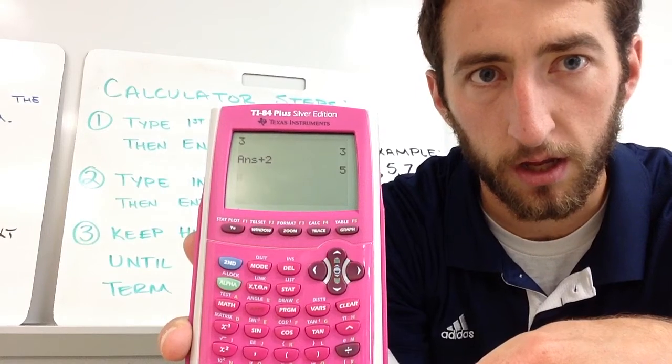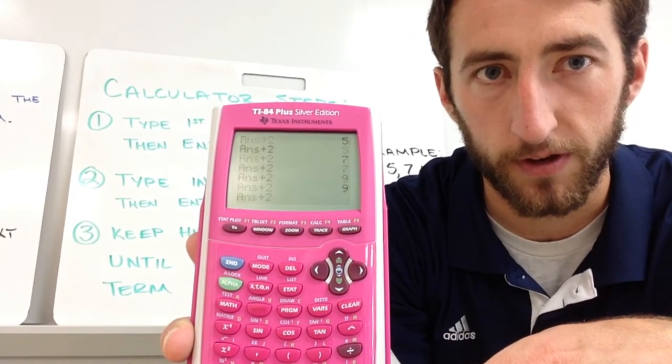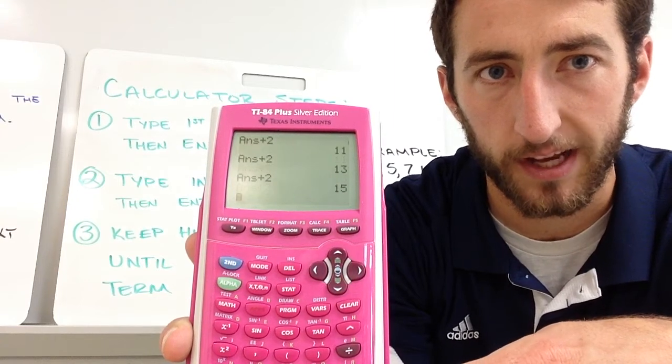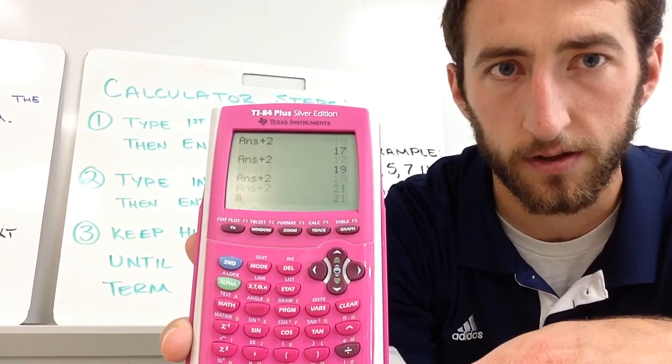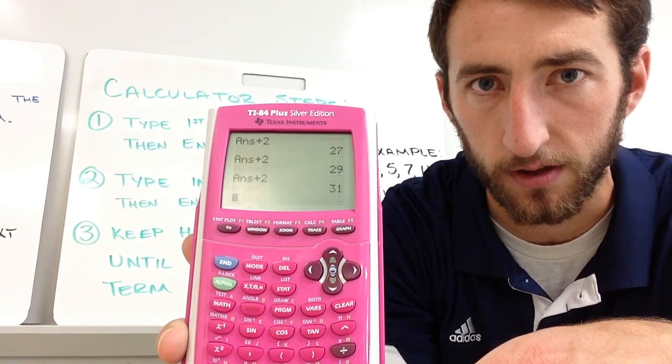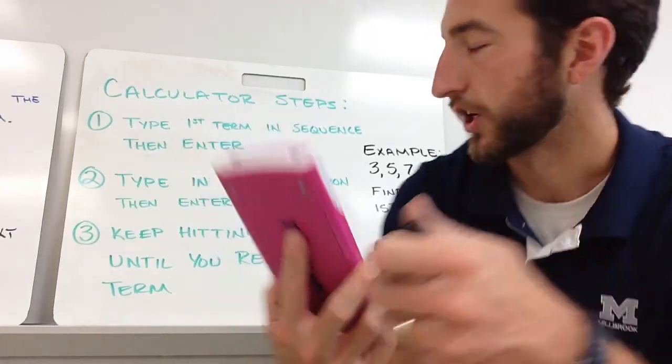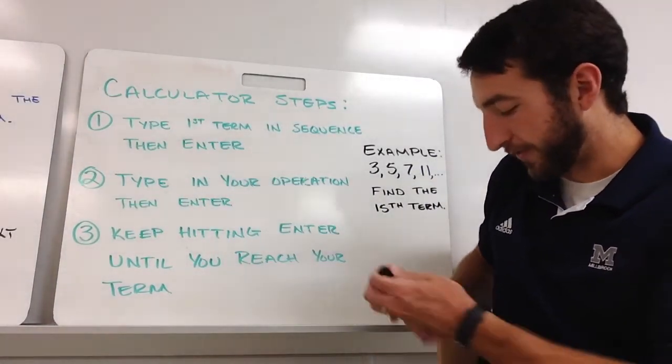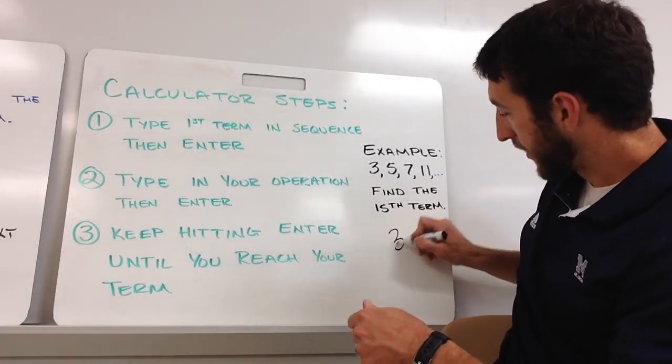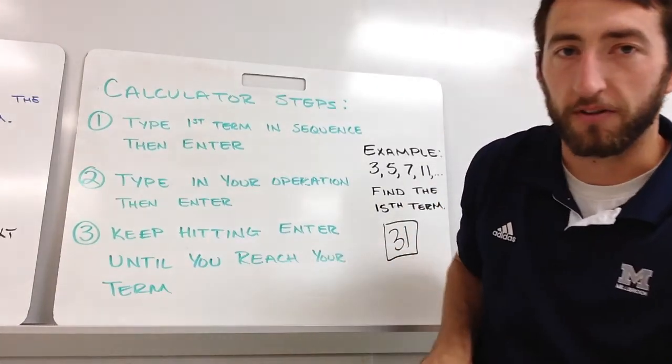Right now I'm at my second term. This is my 3rd, 4th, 5th, 6th, 7th, 8th, 9th, 10th, 11th, 12th, 13th, 14th, 15th, and then we're done. Check out my answer. 31 is going to be my 15th term.